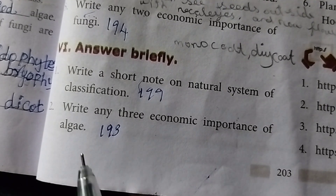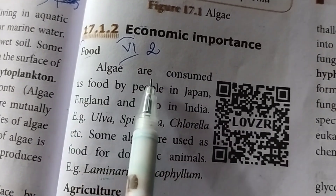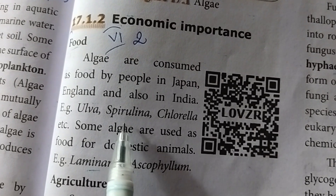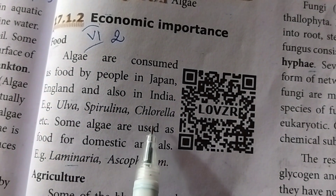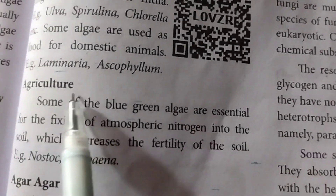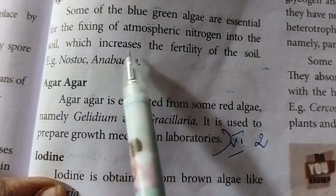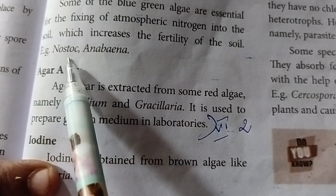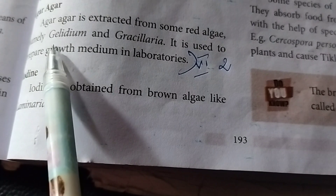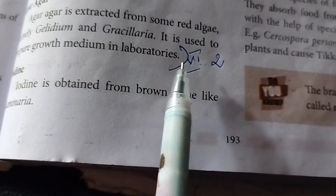Second question: write any three economic importance of algae. Page number 193. Algae are consumed as food by people in Japan, England, and also in India. Examples: Ulva, Spirulina, Chlorella. Some algae are used as food for domestic animals. Examples: Laminaria, Ascophyllum. Agriculture: some blue-green algae are essential for fixing atmospheric nitrogen into the soil, which increases soil fertility. Examples: Nostoc, Anabaena. Agar-agar is extracted from some red algae, namely Gelidium and Gracilaria. It is used to prepare growth medium in laboratories.